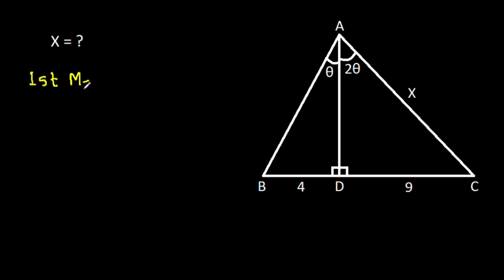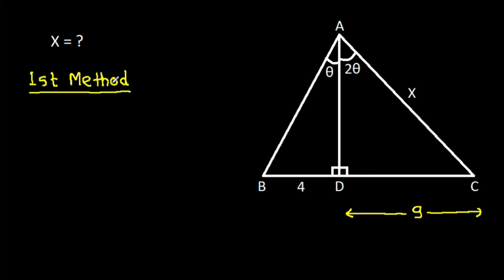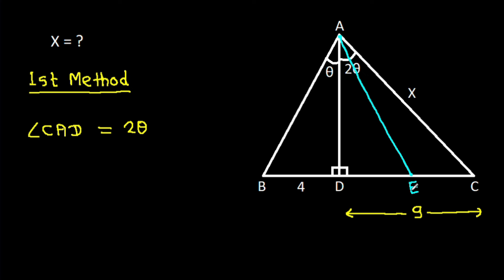The first method: we have CD is 9 and angle CAD is 2 theta. From point A, if we make an angle bisector — suppose this point is E — such that these two angles are each theta.